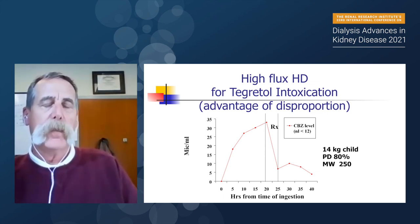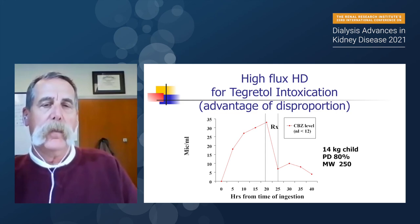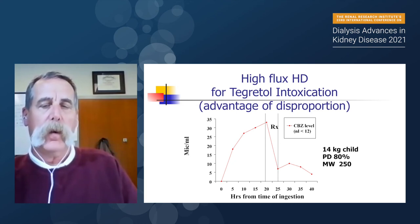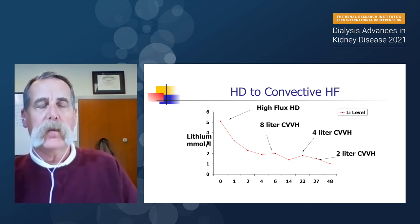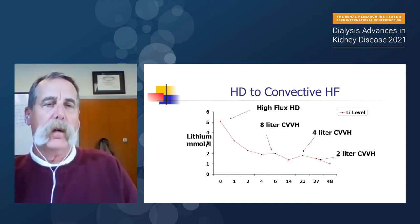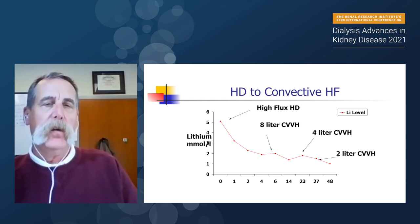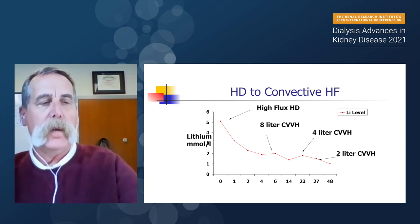This is Tegretol (carbamazepine) — 80% protein-bound, 250 molecular weight. The patient was quite toxic. We cleared it very nicely in about three to four hours with very little rebound. So for things that are highly protein-bound, high-flux hemodialysis should be considered for intoxications. This is another good example of sequential therapy — for the patient with lithium overdose, we did high-flux hemodialysis for three to four hours, then handed the lines off to CVVH. CVVH gives better clearance than CVVHD. You can use sequential therapy for vancomycin, lithium, and other drugs to allow for ongoing clearance.